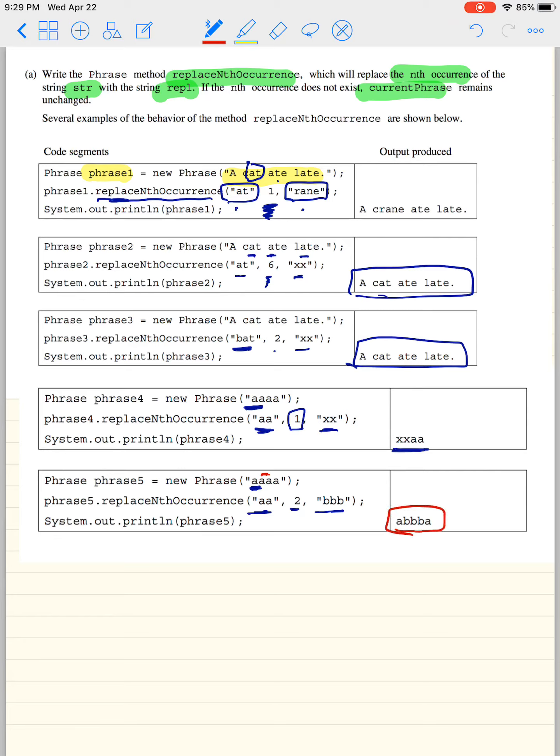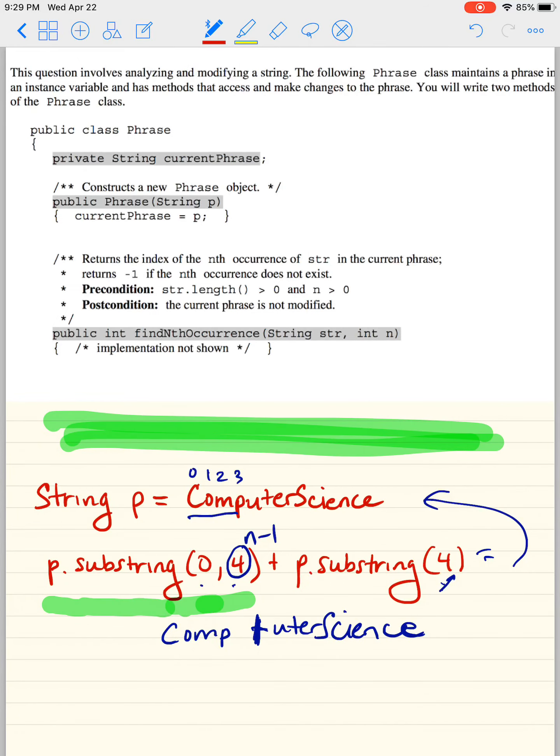So that's what they want you to do for part A. So let's take a look at how to do it. But we need to just figure out what they gave us. So it says the question involves analyzing and modifying a string. The following phrase class maintains a phrase in an instance variable and has methods that access and make changes to the phrase. You will write two methods of the phrase class. So we have this class Phrase. We have this currentPhrase. That's wonderful. We're going to need that.